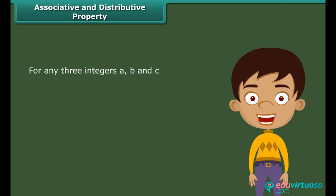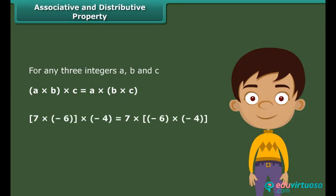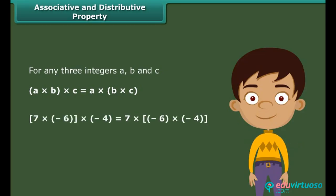For any three integers A, B and C: A times (B times C) is equal to (A times B) times C. For example: 7 times (−6 times −4) is equal to (7 times −6) times −4.